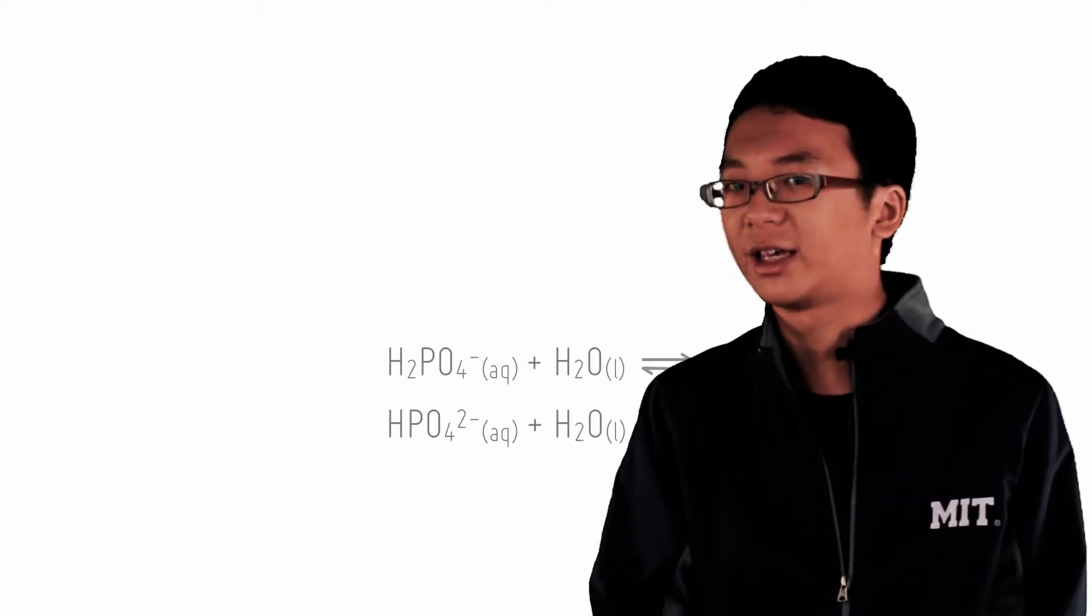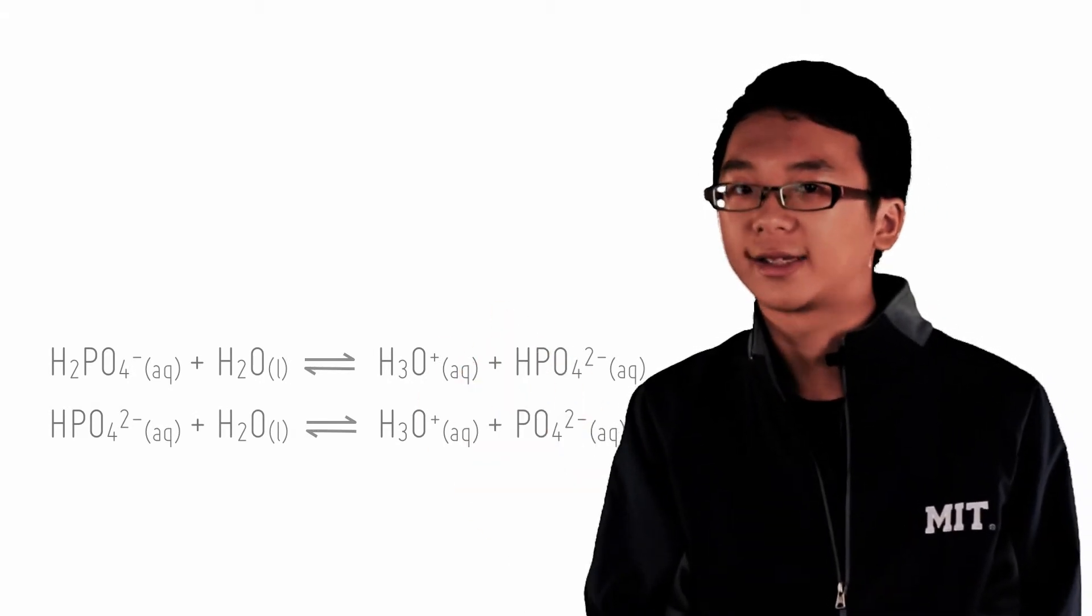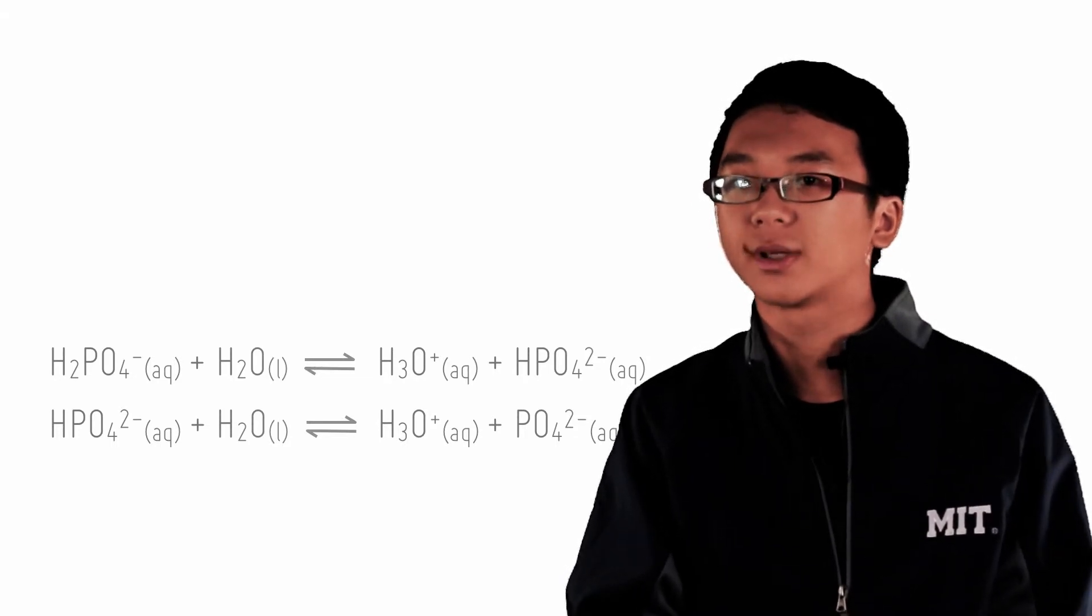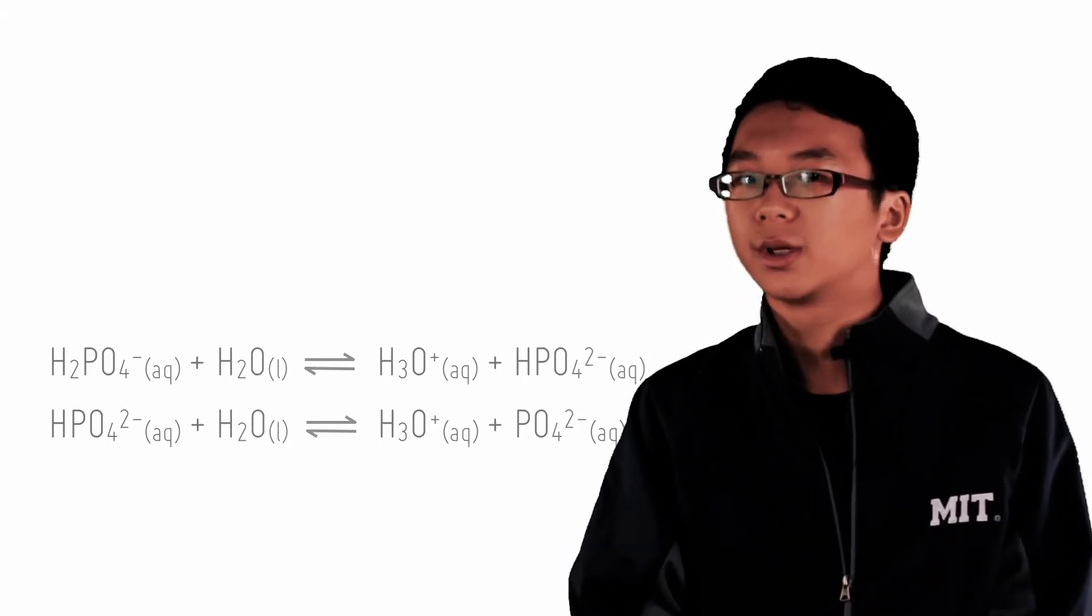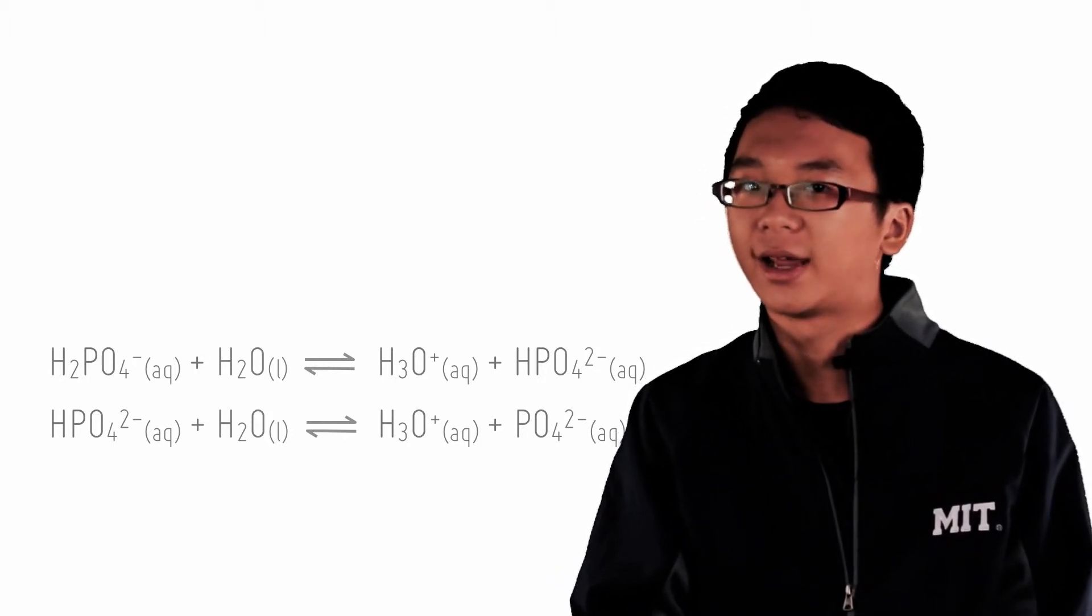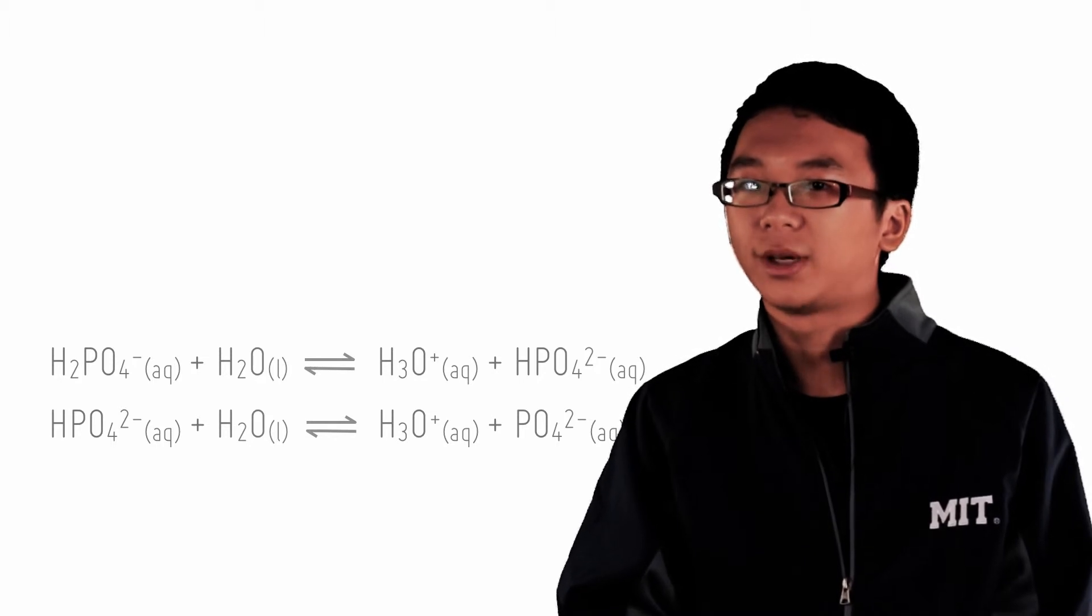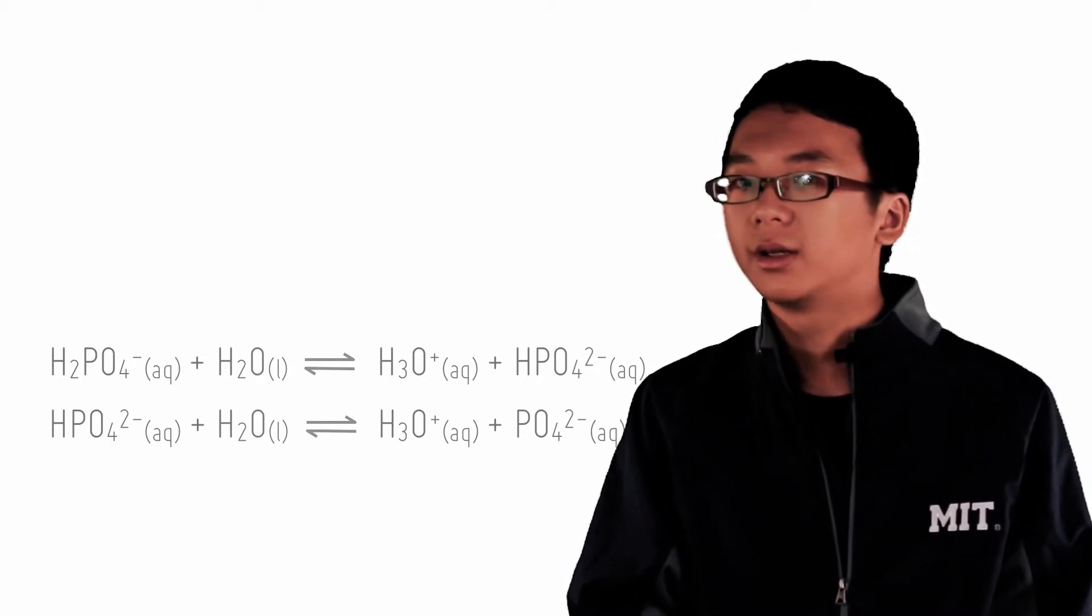Here's a little bit of extra information. Notice that we have H2PO4- as the conjugate base here. It can actually behave as an acid by reacting with water again to produce hydronium and HPO4^2-, your phosphate anion. You might think that being able to dissociate 3 times will make it a stronger acid, but think of it this way.